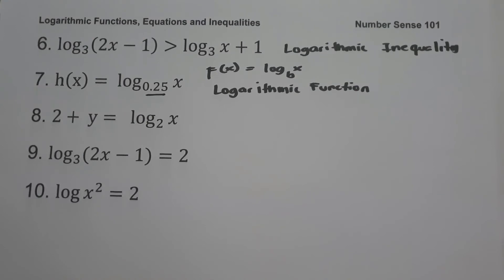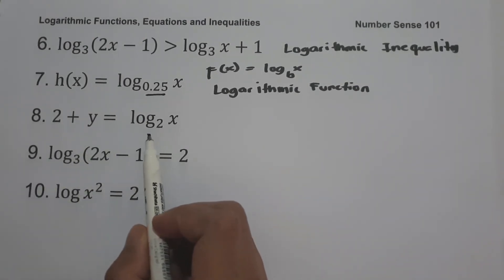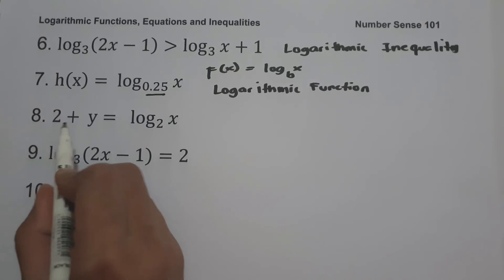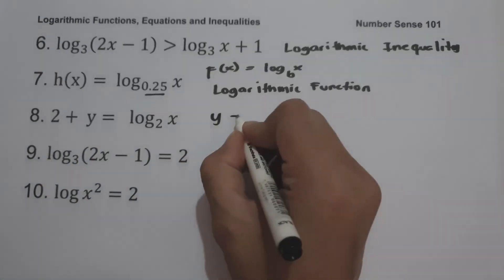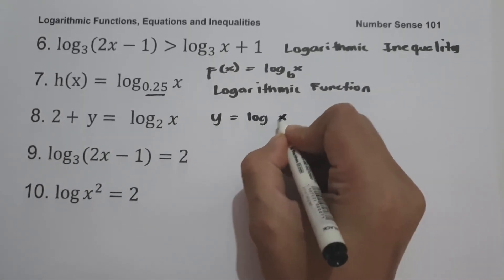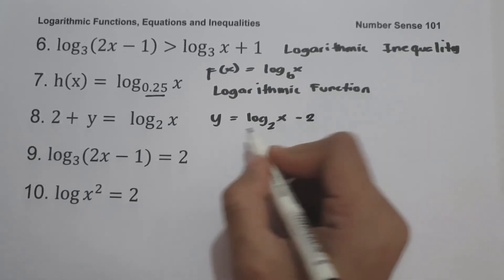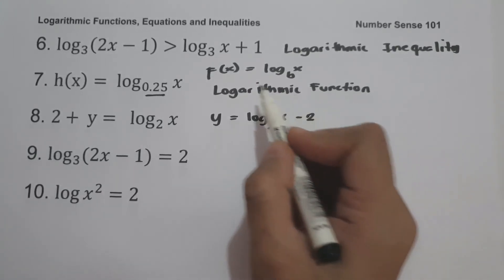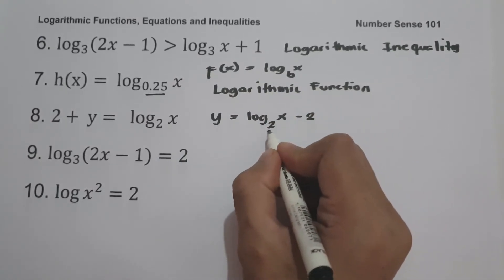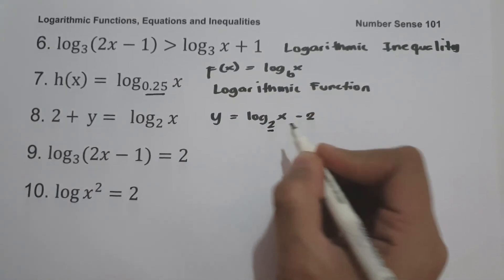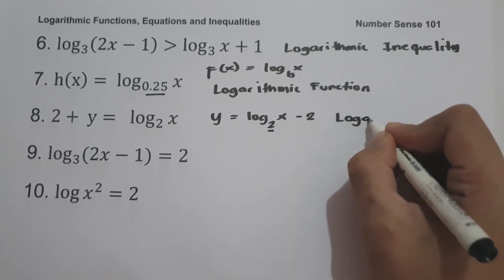On example number 8, 2 plus y equals log_2(x). If we move 2 to the other side of the equation, it gives us y equals log_2(x) minus 2. This is written in the form f(x) = log_b(x) where b is greater than 0 and not equal to 1, therefore, this one is a logarithmic function.